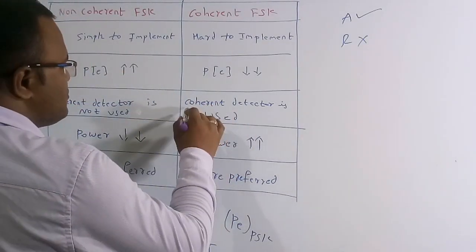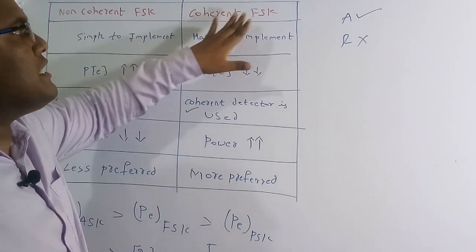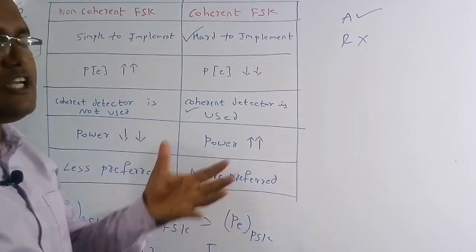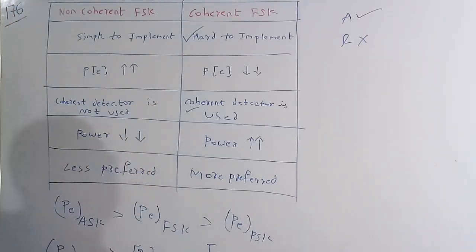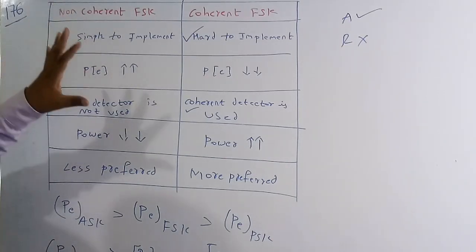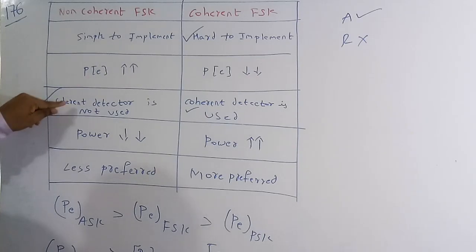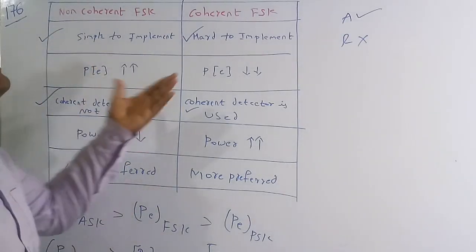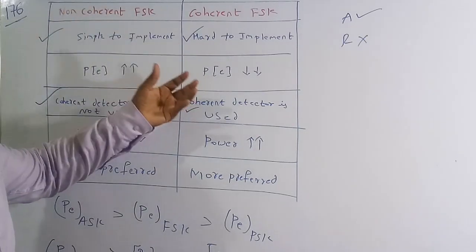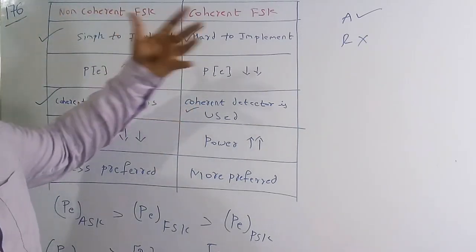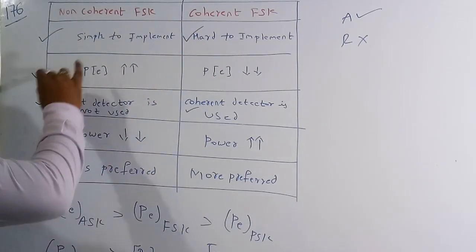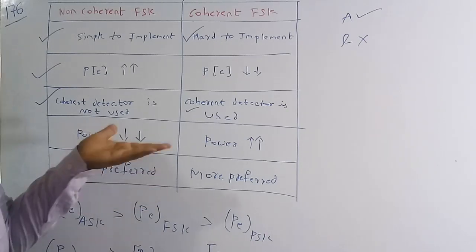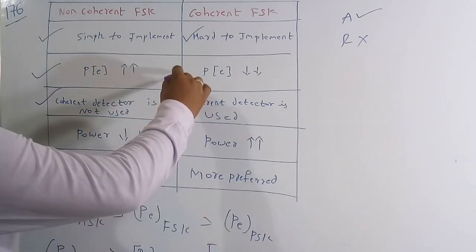Differences: In coherent FSK, a coherent detector is used, so the circuit is complex. In non-coherent FSK, no coherent detector is needed, so the circuit is simpler. The probability of error (noise effect) is higher in non-coherent FSK than in coherent FSK, so coherent FSK has less error. Because coherent FSK uses more circuit elements, its power consumption is higher, not lower. Non-coherent FSK consumes less power.